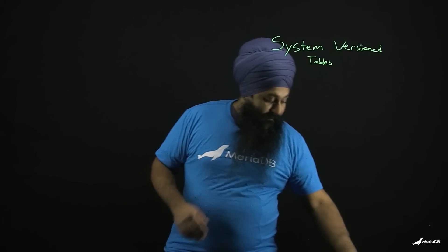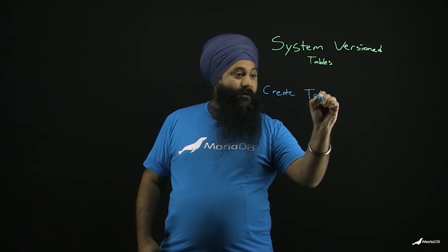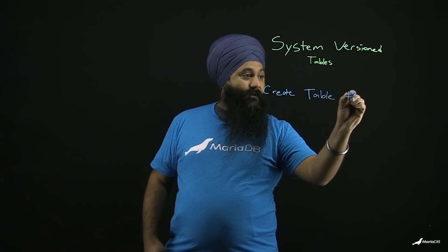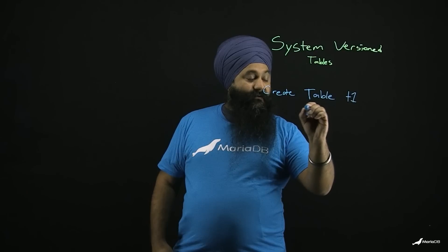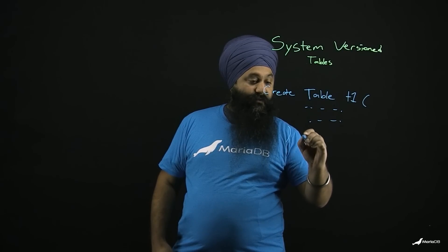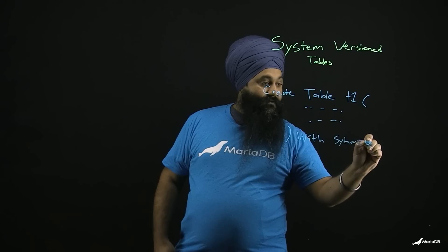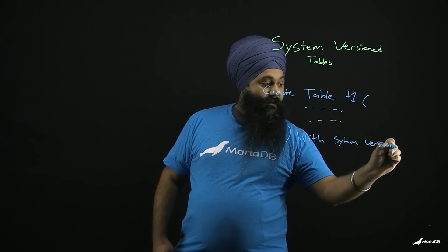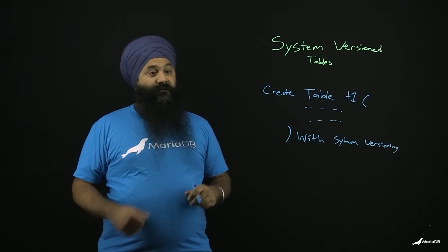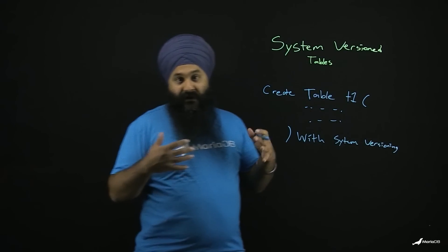How do they work in MariaDB? It's actually pretty simple. When you define your table, you're going to do your CREATE TABLE — we'll call this one T1. At the end, you're going to add your columns in the parentheses, but you're also going to add WITH SYSTEM VERSIONING. When you do that, it will now store history in that table. It'll store every version of that row that ever was throughout its history.